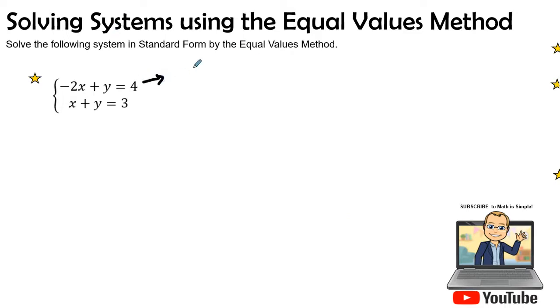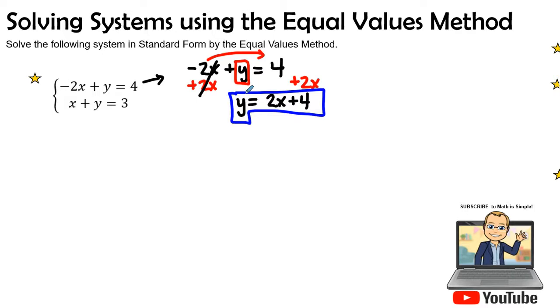Our first equation we see is negative 2x plus y is equal to 4. Now we want to get our y, keep it here on the left-hand side, so that means that I have to get rid of that negative 2x by adding its inverse of a positive 2x on both sides. This will become zero, leaving y by itself, and then I have 2x plus 4. Now this makes it really easy for me to graph because I know the slope and I know its intercept.